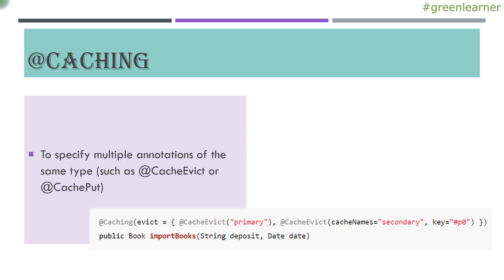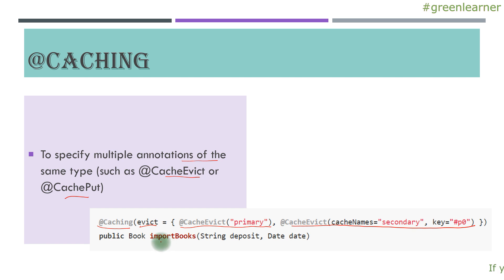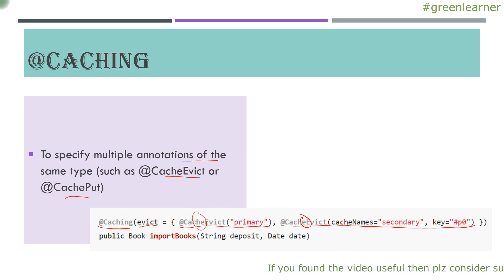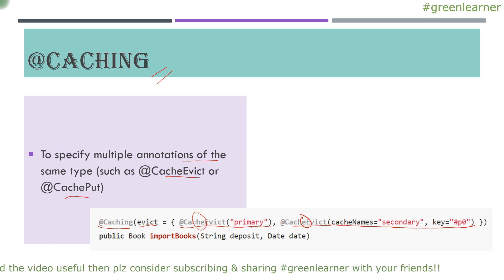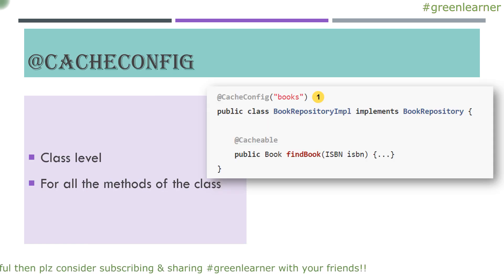Next is the @Caching annotation, which is used to specify multiple annotations of the same type — such as @CacheEvict or @CachePut — on the same method. For example, if you have importBooks method, you cannot have two @CacheEvict annotations directly. But with @Caching, you can define cacheEvict for primary and cacheEvict for secondary, each based on different conditions. This is how @Caching is used to group multiple cache annotations on the same method.